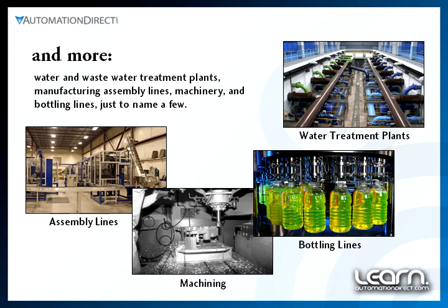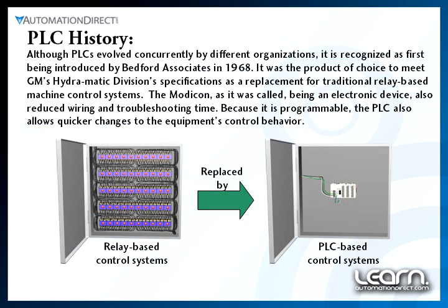The PLC is mostly recognized as being introduced by Bedford Associates in 1968. Originally called a Modular Digital Controller, or Modicon, it became the product of choice in meeting specifications developed by General Motors' Hydromatic Division Plant for replacing traditional relay-based machine control. Its use of ladder logic programming was one of the main features that attracted it to factory personnel. Because it could be programmed, the PLC allowed for quick changes and a reduction in wiring and troubleshooting time. This was a huge advantage over the older relay-based control systems.